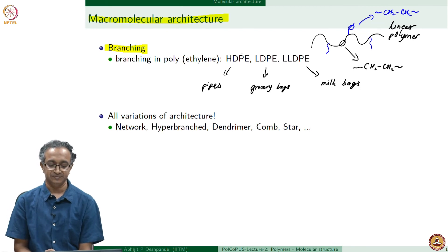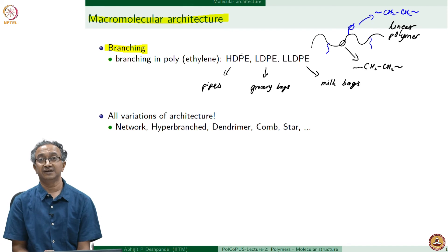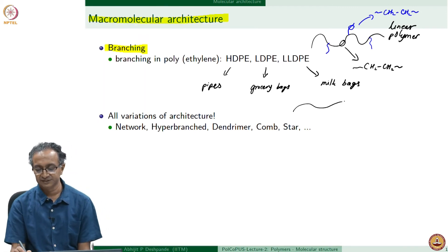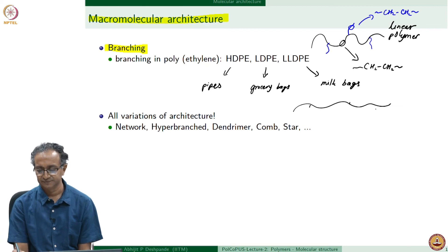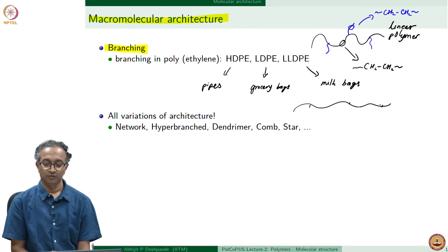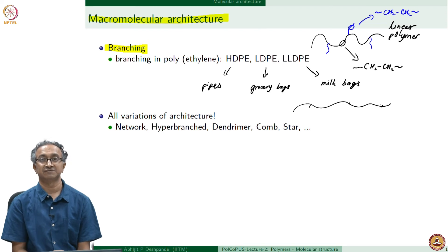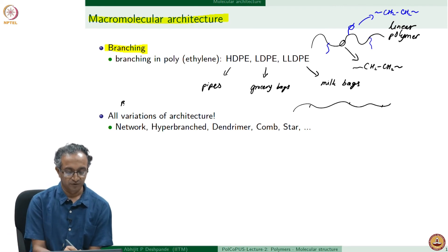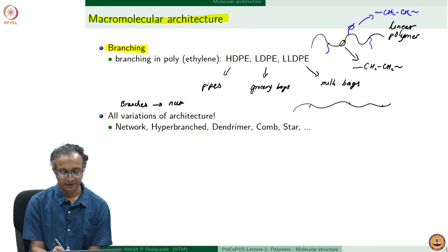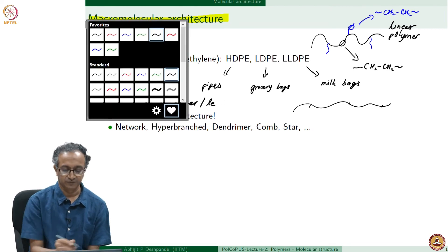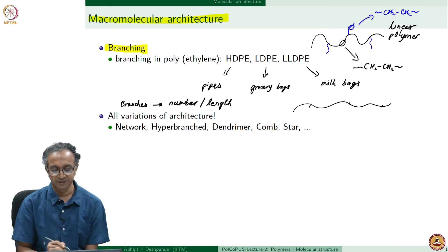The D in HDPE and LDPE refers to density. We have high-density polyethylene, low-density polyethylene, and linear low-density polyethylene. HDPE looks like a linear polymer with maybe some small branches. LDPE has long branches as well as lots of branches, while LLDPE has a controlled set of branches — both the number and length of each branch are controlled. Clearly, for branching and backbone, we need to know both the number of branches and the length of branches to understand what different types of polymers are being generated.